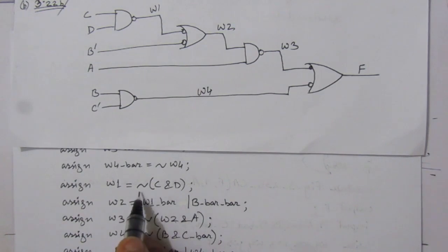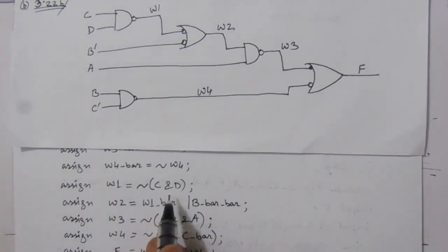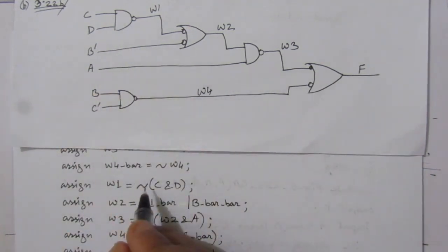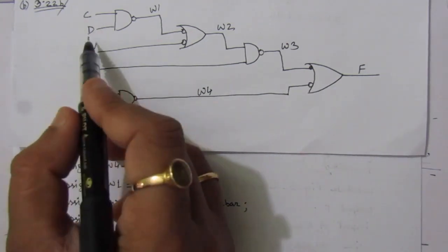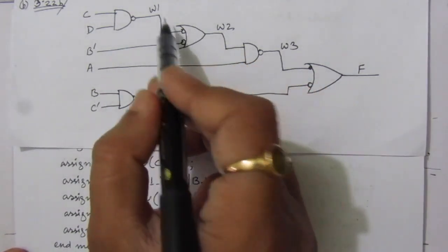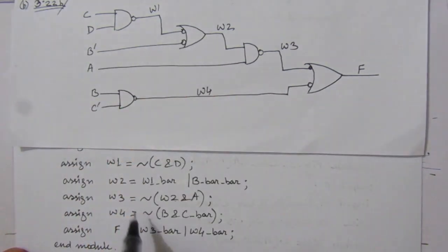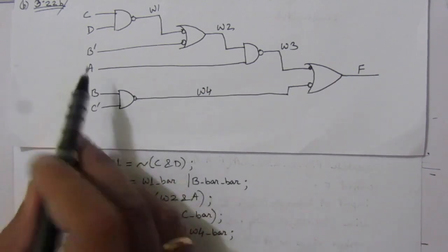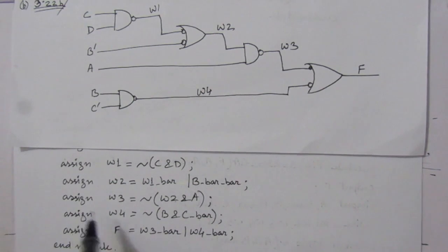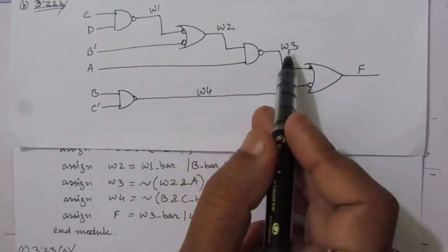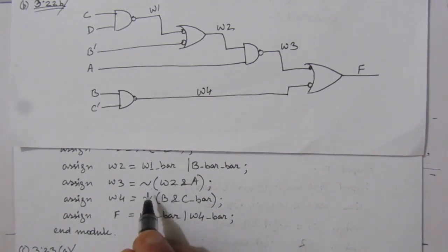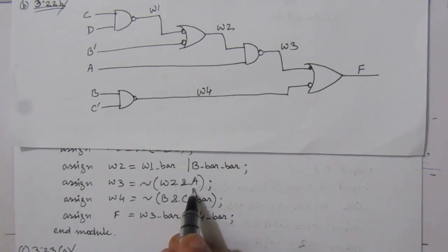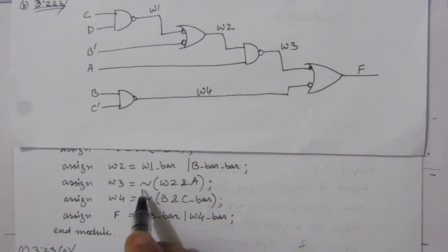Using the tilde (NOT) and AND operators, we can implement NAND operations. W1 is the NAND operation: NOT of (C AND D). W2 is NOT of (W1-bar OR B-bar-bar). W3 is the NAND operation: NOT of (W2 AND A). W4 is the NAND operation: NOT of (B AND C-bar).